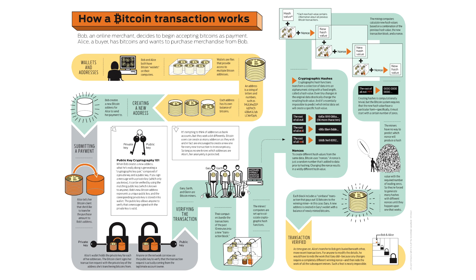Now, if I want to rewrite a portion of the blockchain, I invalidate the hash that was found. In order to get the rest of the network to accept it, I need to find a new random number that, when combined with the block, produces a hash that correctly solves the problem. But the entire network combined can only find one such answer every 10 minutes. For me to do it myself would take years, and by the time I did find an answer, the rest of the network would have found many, many more blocks and tacked them on to the end. The rest of the world will use the longer blockchain, so all of my work would be wasted.